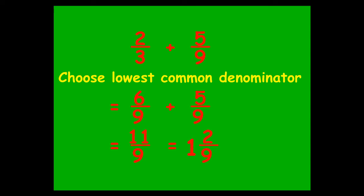So that's how you add and subtract fractions. Make sure both denominators are the same, make sure you simplify your answer, and make sure you don't leave any answers as top-heavy fractions — write them as mixed numbers. I hope that was helpful and that you're now able to add and subtract fractions.